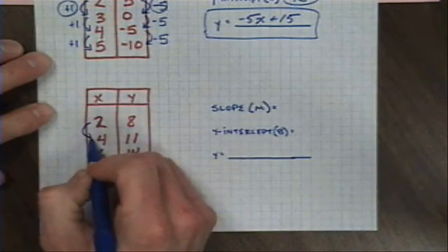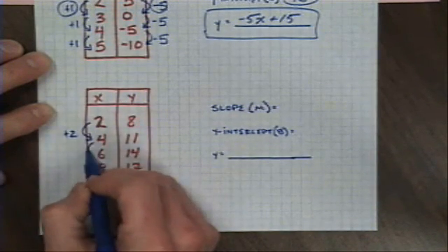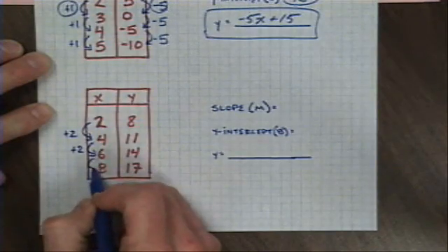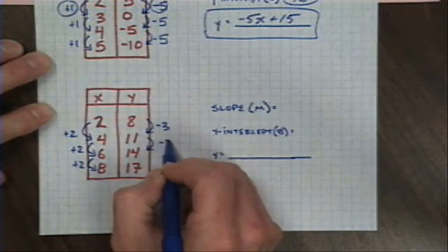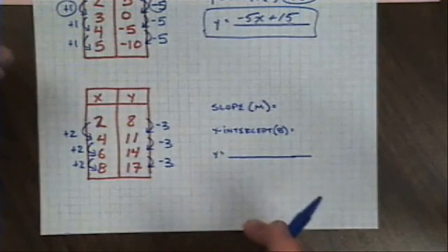If we look at a second example, very similar to the first. In this case I have an increase on my x's of plus 2 every time. Now by the way, notice how it's always increasing or in the previous example decreasing by the same amount. That's the nature of what we're doing in pre-algebra. We're working with what are called linear equations.